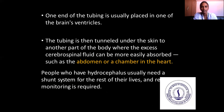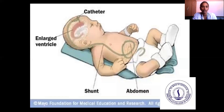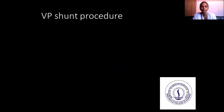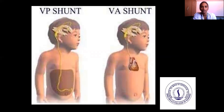One end of the tubing is placed in one of the brain ventricles and the tube is tunneled under the skin to another part of the body where the excess CSF can be absorbed, such as the abdomen. People with hydrocephalus usually need a shunt system for the rest of their lives and regular monitoring is required. This picture shows the child with the catheter, enlarged ventricles, and the shunt running from the ventricle to the abdomen. The VP shunt is ventriculoperitoneal shunt, and the VA shunt is ventriculoatrial shunt.